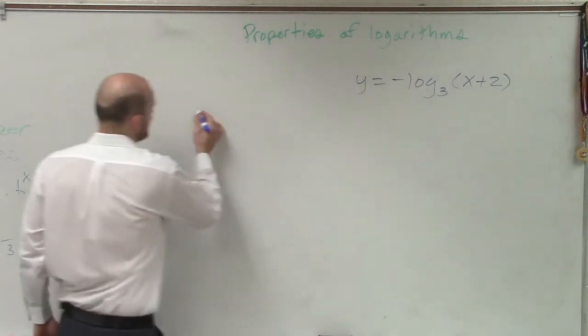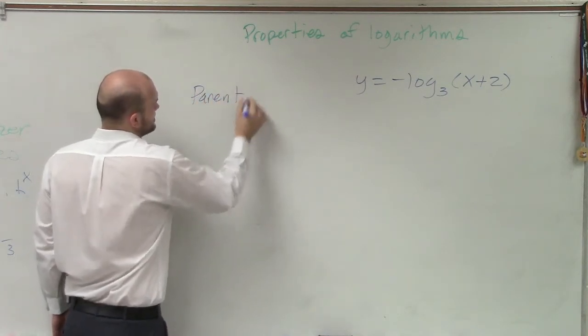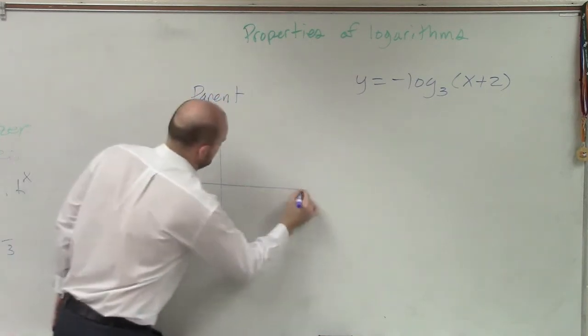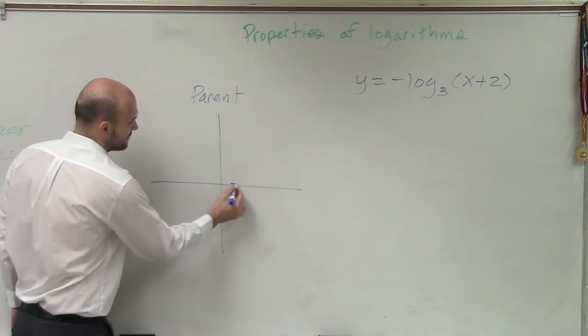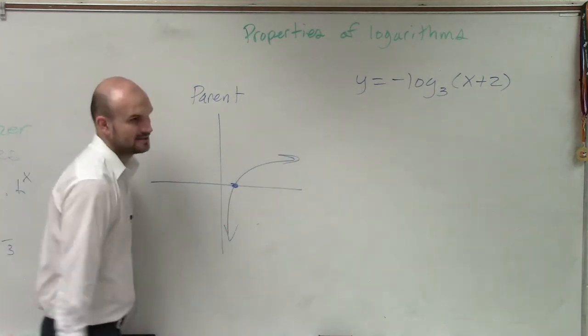But again, ladies and gentlemen, a couple things. Graph in the parent, all right? Parent graph, we know across that 1 comma 0. It looks something like that, right?